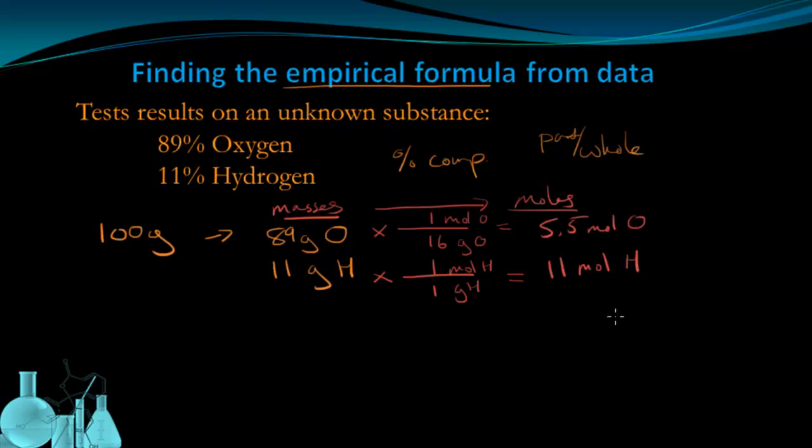Now that I have moles, I can look at the mole ratio. Hydrogen is 11 to oxygen's 5.5. I know this formula is not possible because the law of multiple proportions says that the ratio should be in small whole numbers.